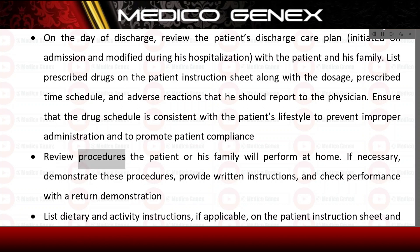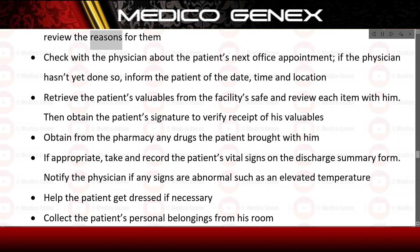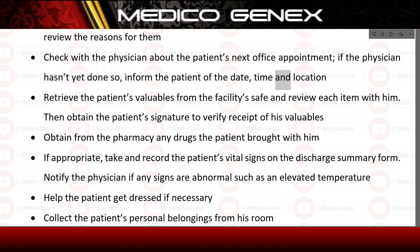Review procedures the patient or family will perform at home. If necessary, demonstrate these procedures, provide written instructions, and check performance with a return demonstration. List dietary and activity instructions, if applicable, on the patient instruction sheet and review the reasons for them. Check with the physician about the patient's next office appointment. If the physician hasn't yet done so, inform the patient of the date, time, and location.